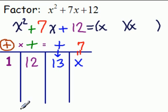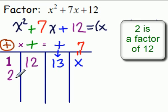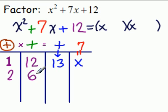So now we look for the next divisor of 12 after 1. That would be 2. 2 divides 12. 2 times 6 is 12. This says add them. That's 8. That's not equal to 7.